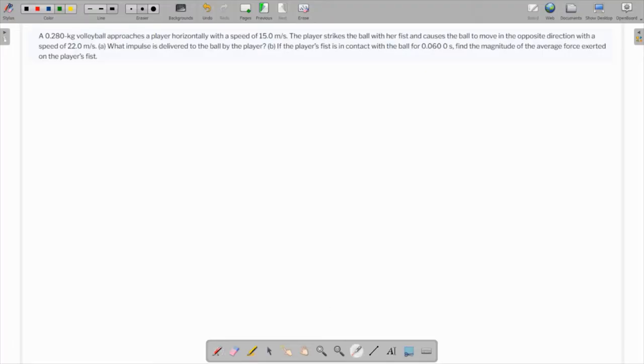In this question, we are given that a 0.280 kilogram volleyball approaches a player horizontally with a speed of 15 meter per second. The player strikes the ball with a fist and causes the ball to move in the opposite direction with a speed of 22 meter per second.